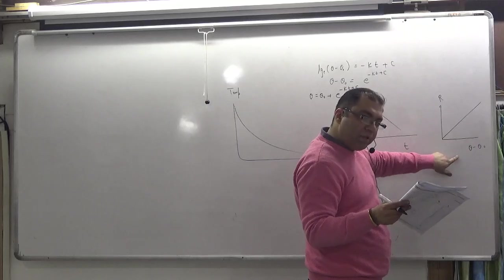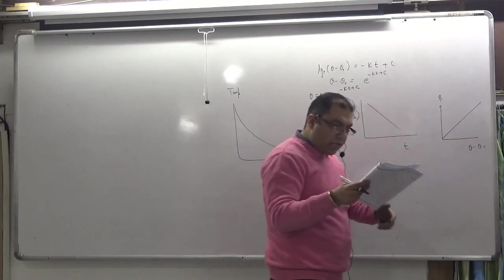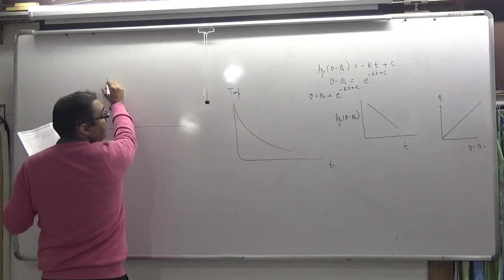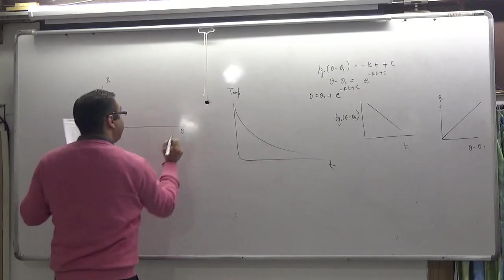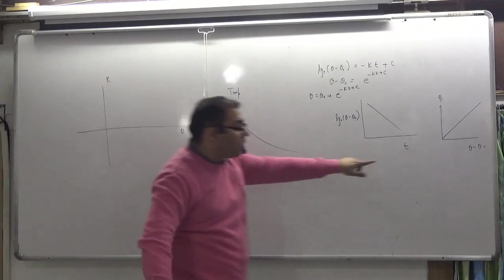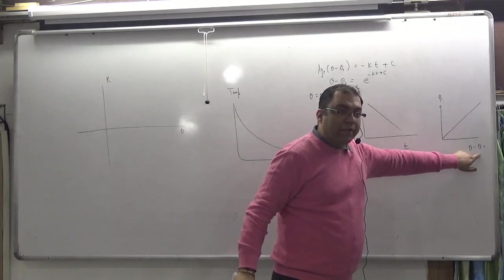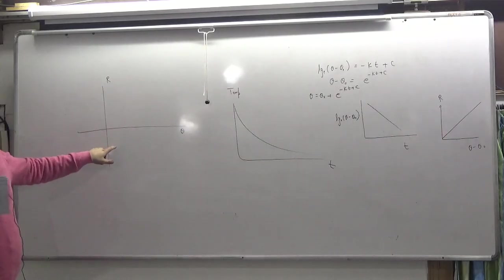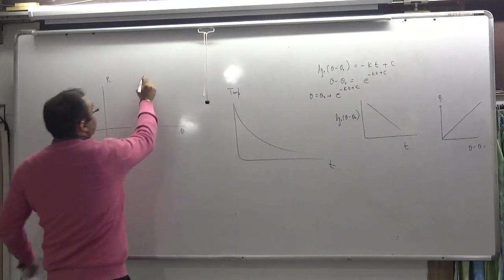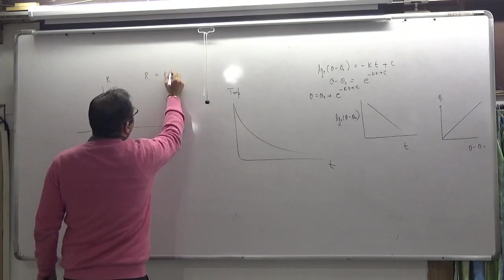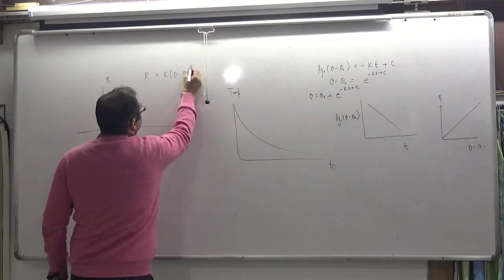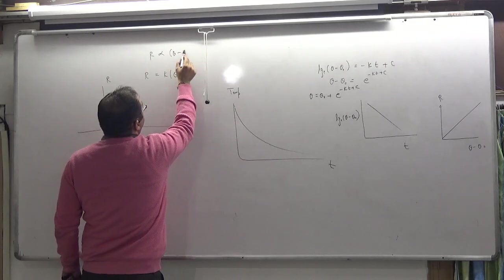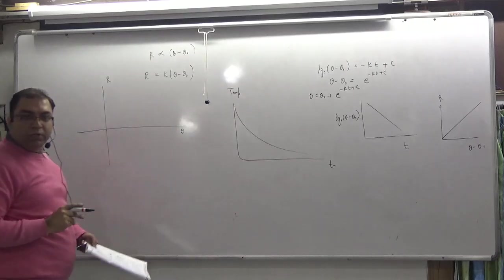The third graph shows rate of cooling R versus temperature. According to Newton's Law of Cooling, rate of cooling is directly proportional to temperature difference. So R is proportional to (theta minus theta-surrounding). The graph of R versus theta has slope proportional to k, and the surrounding temperature theta-not gives a negative intercept on the theta-axis.